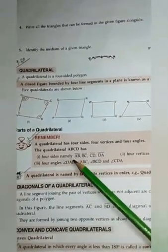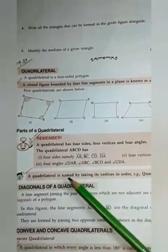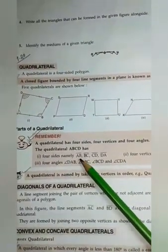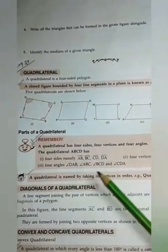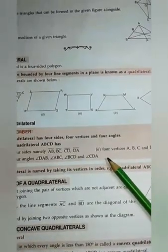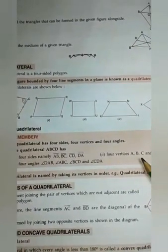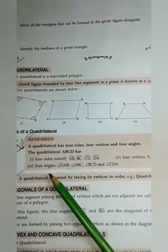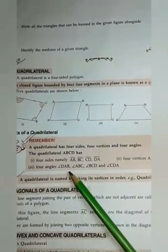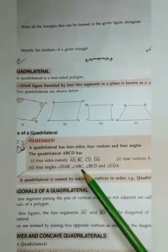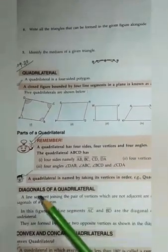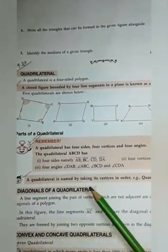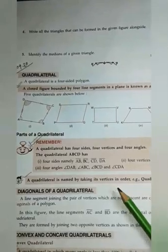The quadrilateral ABCD has four sides namely AB, BC, CD and DA. Second point: four vertices A, B, C and D. Third point: four angles — angle DAB, angle ABC, angle BCD and angle CDA. A quadrilateral is named by taking its vertices in order.